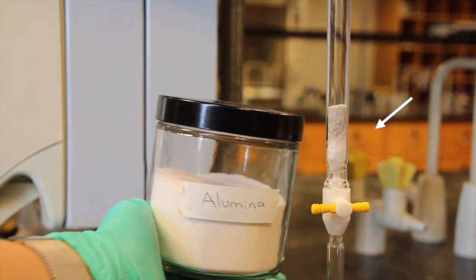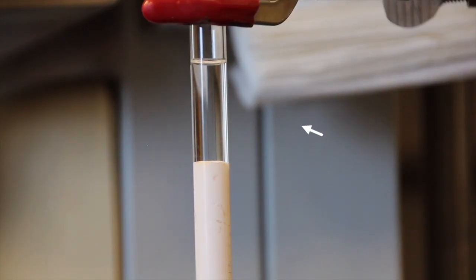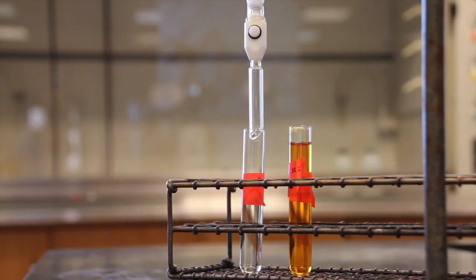The stationary phase is a solid, usually either alumina or silica gel, held in a column. The mobile phase is a liquid that is allowed to percolate through the solid and is collected in fractions as it leaves the bottom of the column.